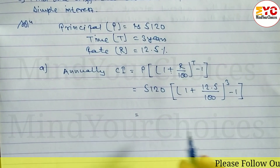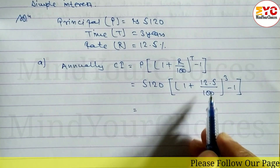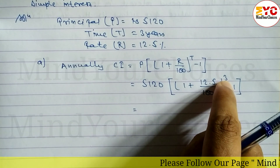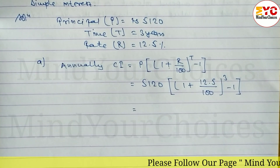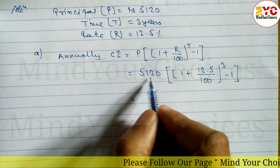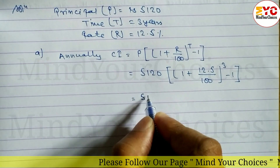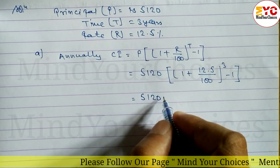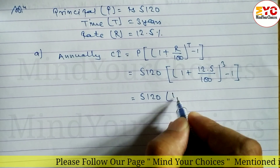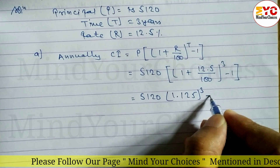Now let's calculate this step by step. First, 12.5 divided by 100, then add 1. We get 1.125. Then raise to the power 3, giving 1.125^3, then subtract 1, and finally multiply by 5,120.